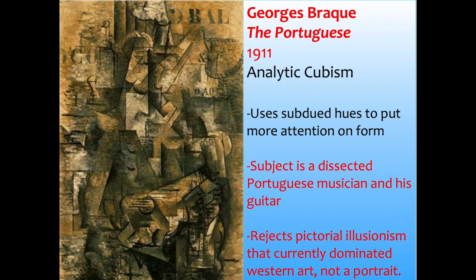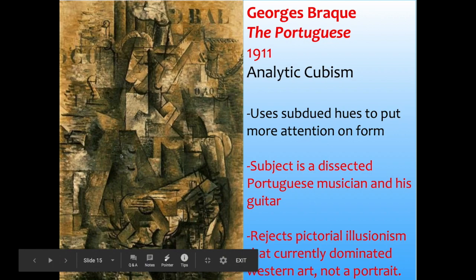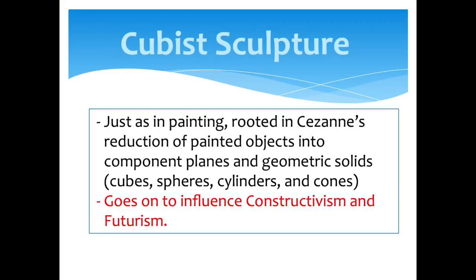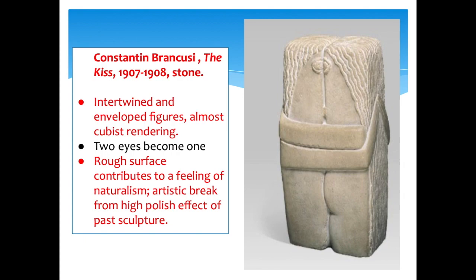Another key Cubist artist Picasso worked with was Georges Braque. This work is called The Portuguese — Analytic Cubism — using subdued hues to put more attention on form. The subject is a Portuguese musician, dissected. You can see him and his guitar; look below for the opening of an acoustic guitar with strings. Braque is rejecting pictorial illusionism that dominated Western art — this is not really a portrait, it's an analysis. Cubism went on to influence Cubist sculpture, the Russian movement of Constructivism, and Futurism.